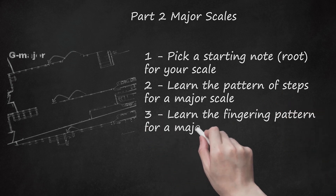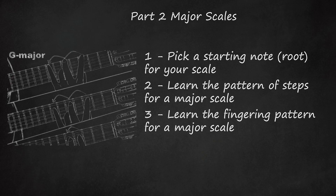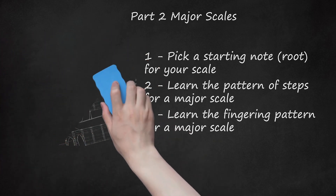Learn the fingering pattern for a major scale. You can play a whole scale on one string, but this is very awkward. Instead, it's much more common to move through a few different strings as you play your scale, minimizing hand motion. For the G major scale, start on the 3rd fret of the low E string. Play A and B on frets 5 and 7 of the E string, then C on the 3rd fret of the A string, D and E on frets 5 and 7 of the A string, F-sharp on fret 4 of the D string, and end on G at the 5th fret of the D string. You don't need to move your hand up and down the neck — just change strings and stretch your fingers.